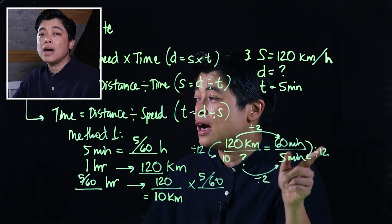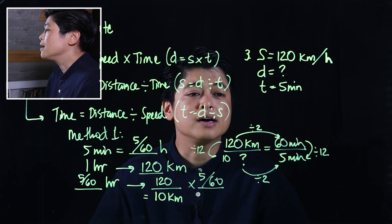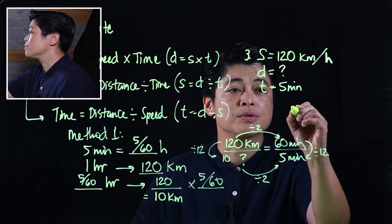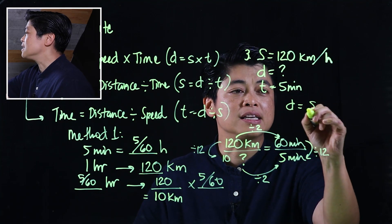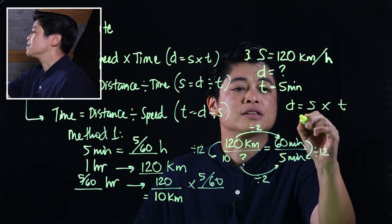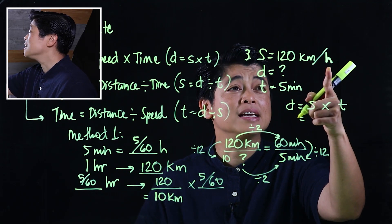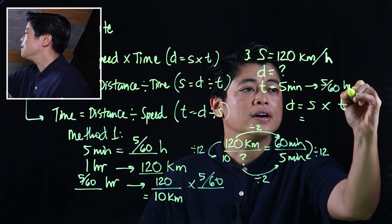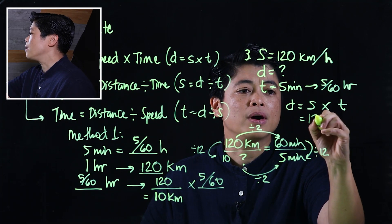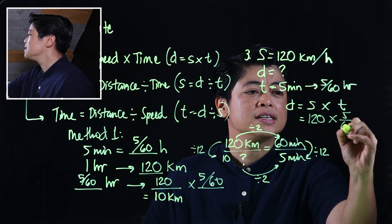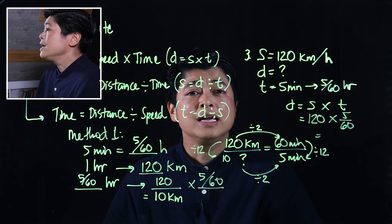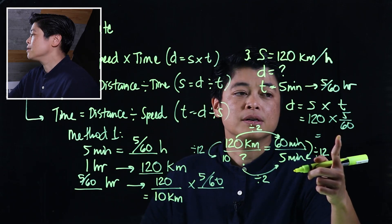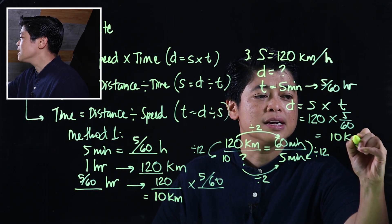For method two, we use the formula. Since we're looking for distance, the formula is distance equals speed times time. The speed is 120 km/h and the time is 5/60 of an hour, so distance equals 120 times 5/60. This is easier to compute with a calculator and also gives us 10 kilometers.